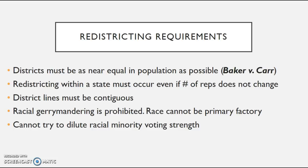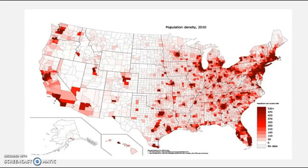In recent years there's been a major demographic shift as people move to city areas, so rural areas don't deserve as much representation because they're losing population — that's why districts have to be redrawn every 10 years. They must be contiguous, racial gerrymandering is prohibited, race cannot be the primary factor as you'll see in Shaw v. Reno, and you cannot dilute racial minority voting strength by districting in a way that splits up, for example, Hispanic votes.